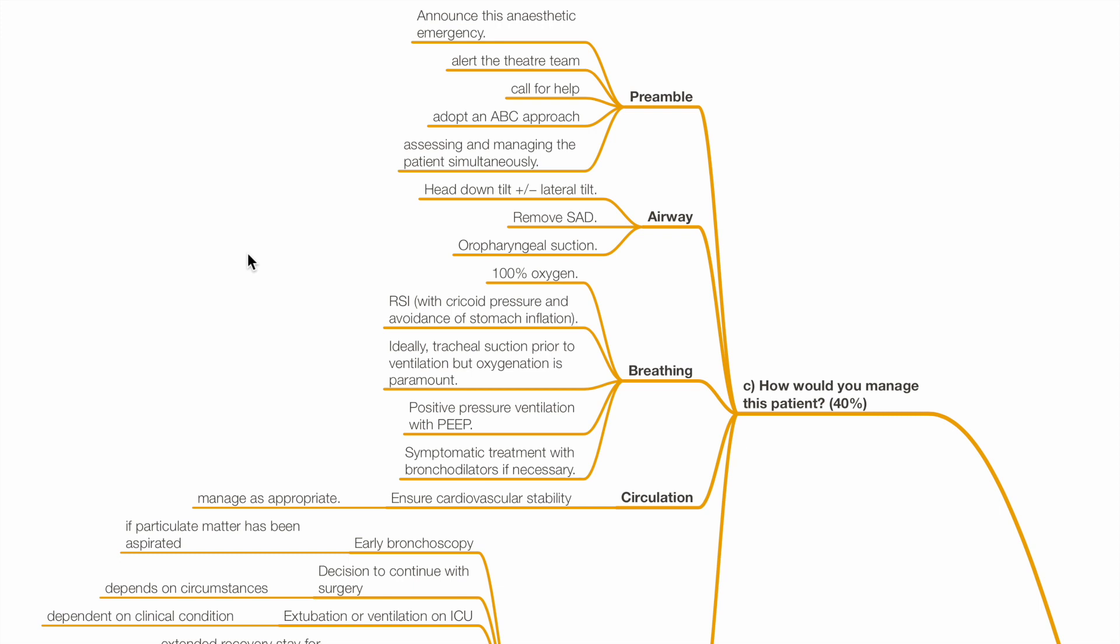First, announce that this is an anesthetic emergency. Alert the theatre team and call for help. Adopt an ABC approach and assess the patient and manage the patient simultaneously. Management of airway involves head-down tilt with or without lateral tilt, removal of the supraglottic airway device and oropharyngeal suction.